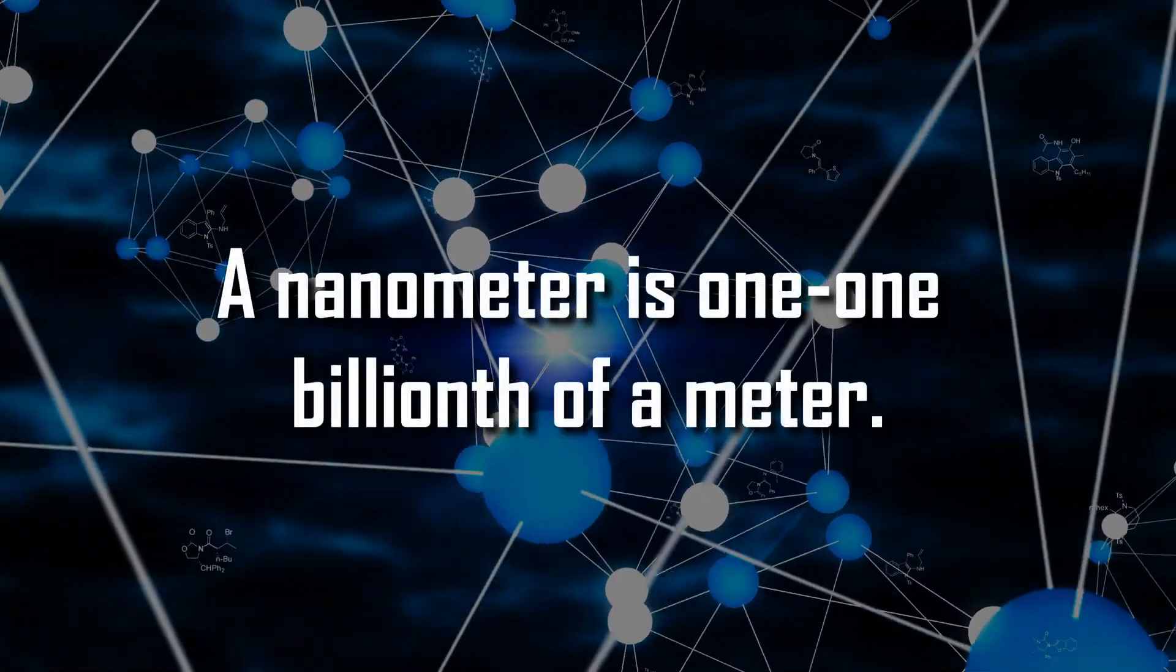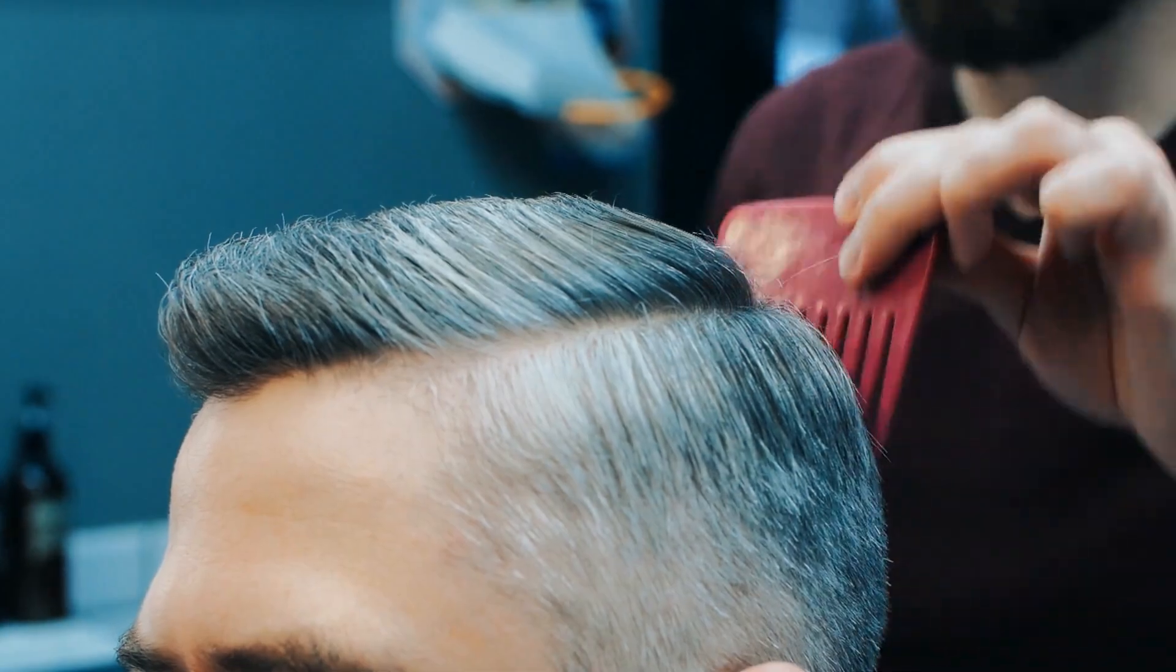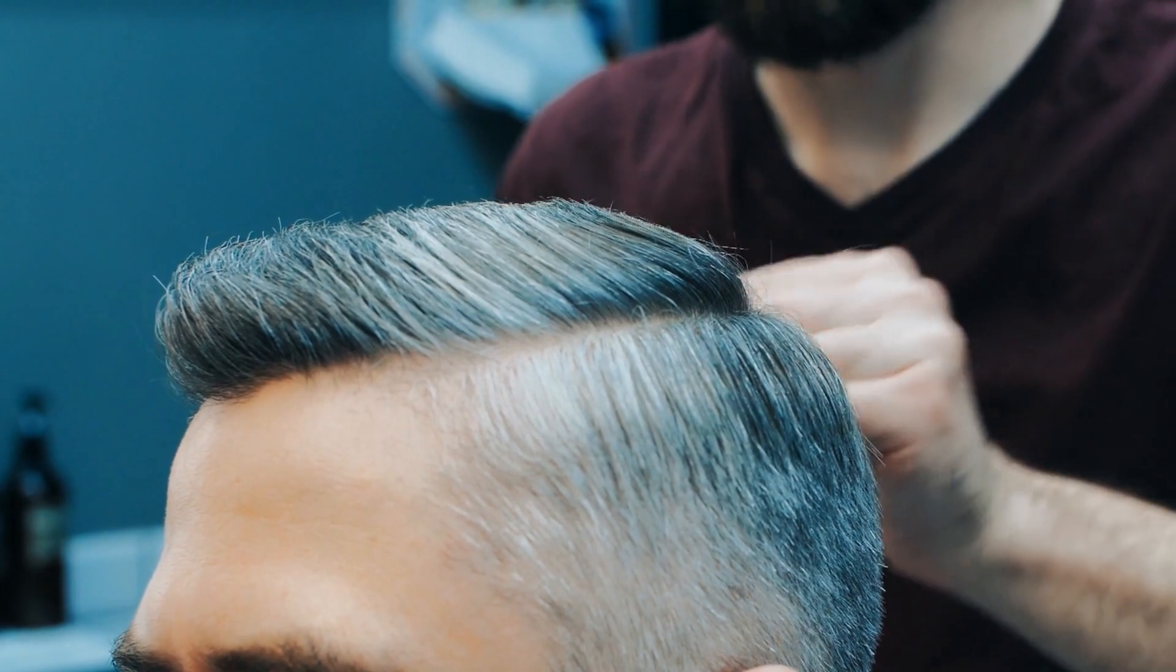A nanometer is 10 to the negative 9 meters, which is one billionth of a meter. That's about 100,000 times smaller than the width of a human hair.